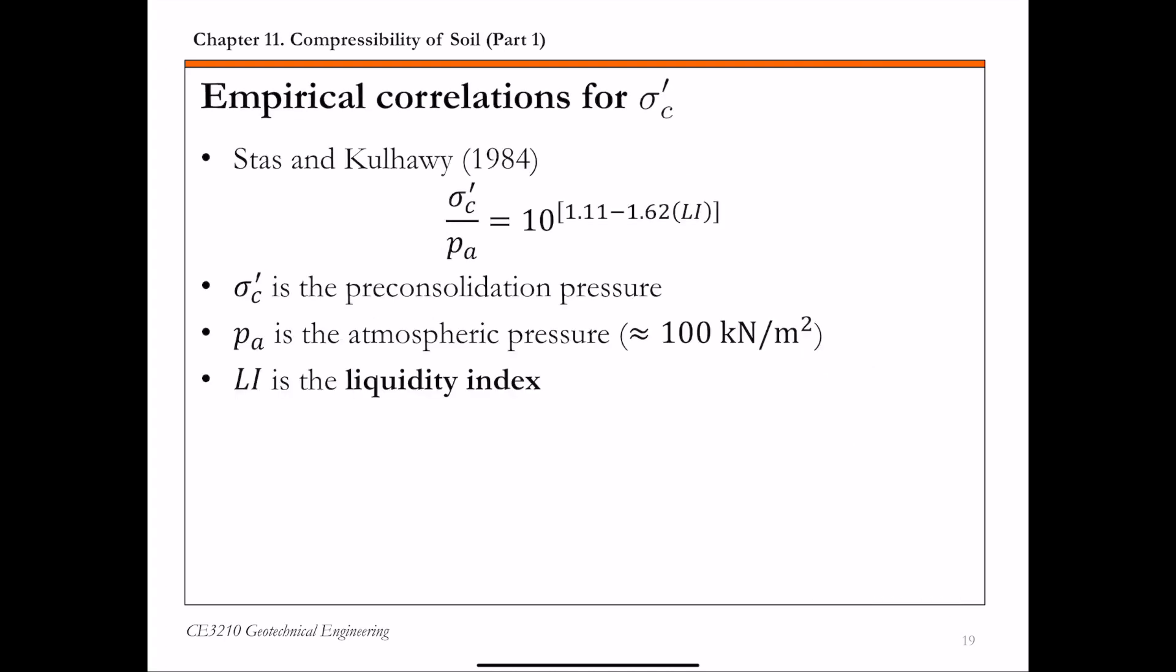In addition to the Casagrande's graphical procedure, there are also empirical correlations that you can use to determine the pre-consolidation pressure sigma c prime. One such example is given on the slide where the liquidity index Li is used to estimate pre-consolidation pressure. The definition of liquidity index Li is the moisture water content omega minus plastic limit PL over liquid limit LL minus PL.